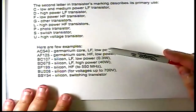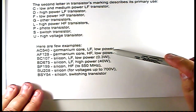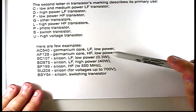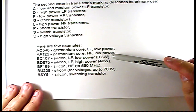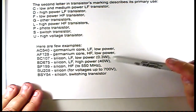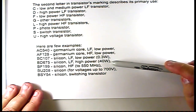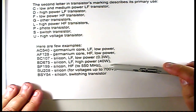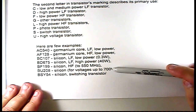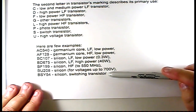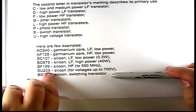Here are a few examples. An AC540 is a germanium core, low frequency, low power transistor. An AF125 is a germanium core, high frequency, low power transistor. A BC107 is a silicon low power, low frequency transistor. A BF199 is a silicon high frequency transistor. A BU208 is a silicon transistor for voltages up to 700 volts. And a BSY54 is a silicon switching transistor.